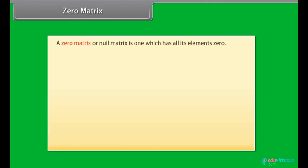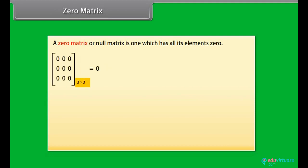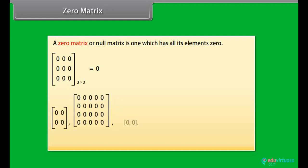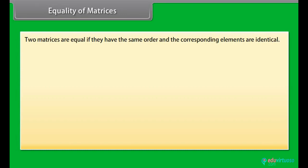Zero matrix: A zero matrix or null matrix is one which has all its elements equal to zero. Here is a 3 by 3 zero matrix, along with three more examples of zero matrices. Equality of matrices: Two matrices are equal if they have the same order and the corresponding elements are identical.